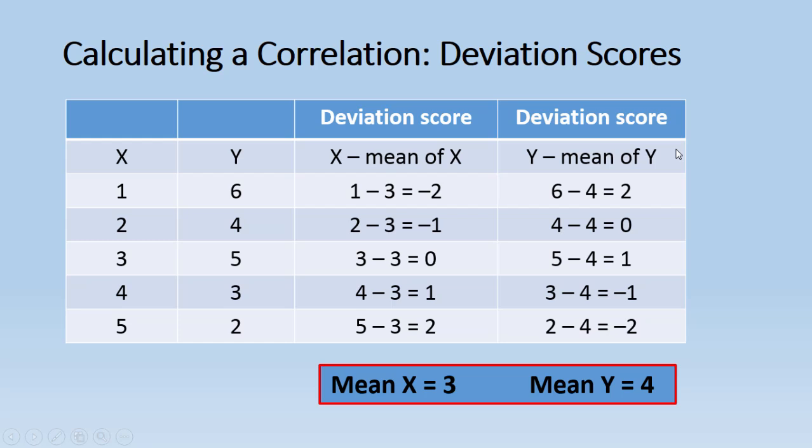So now let's find the deviation scores for Y. So once again, we just take the value for Y and subtract the mean, which is 4 in this case, from each value. So 6 minus 4 is 2. 4 minus 4 is 0. 5 minus 4 is 1. 3 minus 4 is negative 1. And 2 minus 4 is negative 2. Now let's take a look at this. We have positive 3, negative 3. Notice how those add up to 0 again. So that looks good. So that's it for the deviation scores.